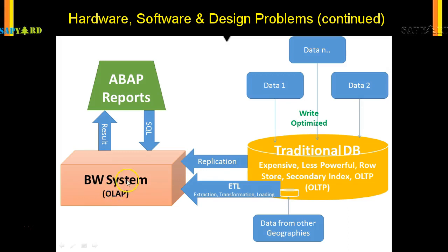The BW system was read-optimized — that is, it was an OLAP system, optimized for online analytical processing. So now SAP had OLTP, which is a write-optimized database, and a read-optimized system, making reporting better.